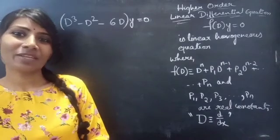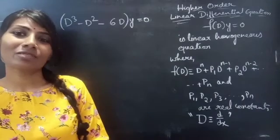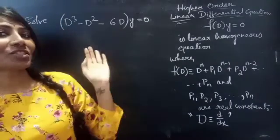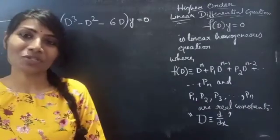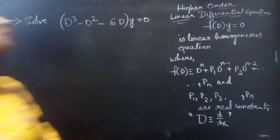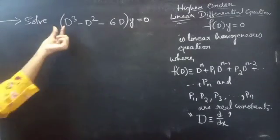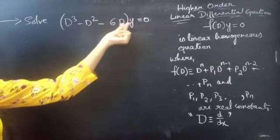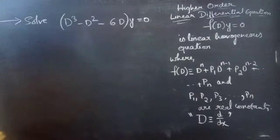Hello everyone, this is Jay Kalpana here. In this video, we are going to solve the given differential equation. So let's get going. Problem: solve d-cubed minus d-squared minus 6d into y equals to 0.